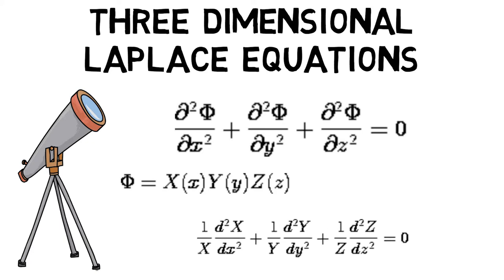Introducing the second equation into the first and dividing by ψ we obtain (1/X)(d²X/dx²) + (1/Y)(d²Y/dy²) + (1/Z)(d²Z/dz²) = 0.